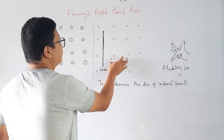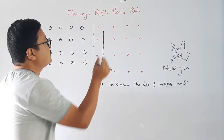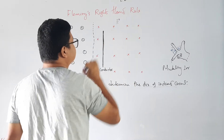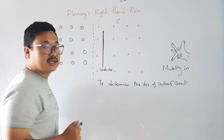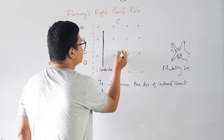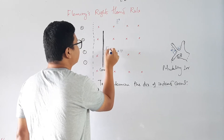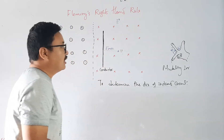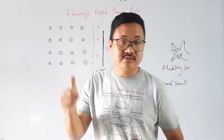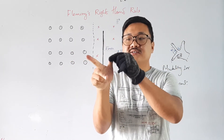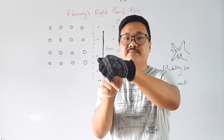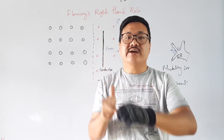Let us consider this first case. We have a uniform magnetic field B going inside, and a conductor which we move in a given direction with velocity V. To remember the rule, use 'Father, Mother, Child': Father means force, Mother means magnetic field, and Child means current.